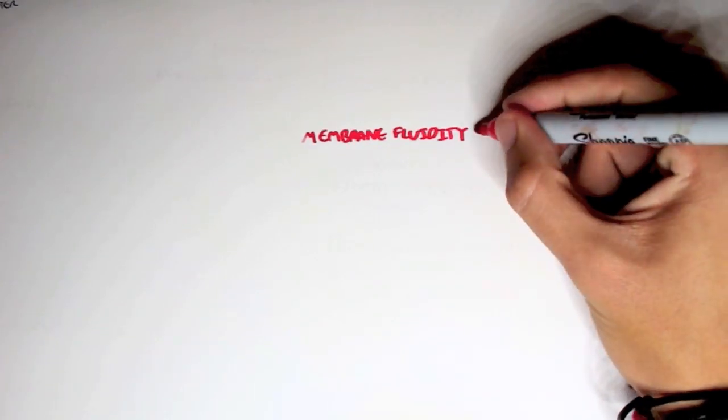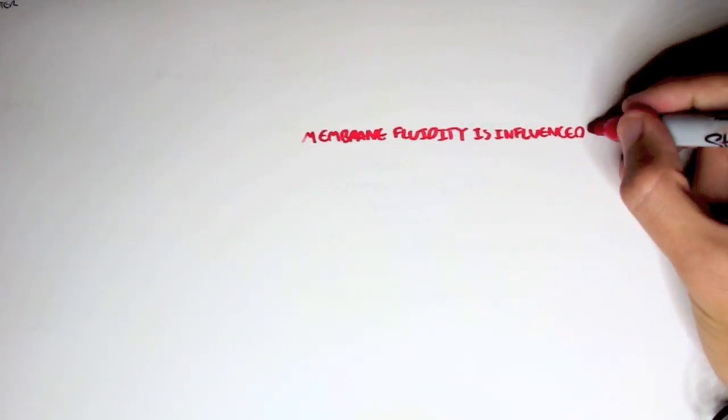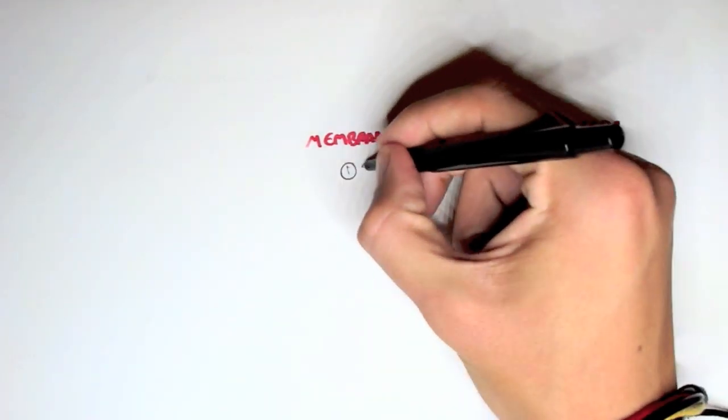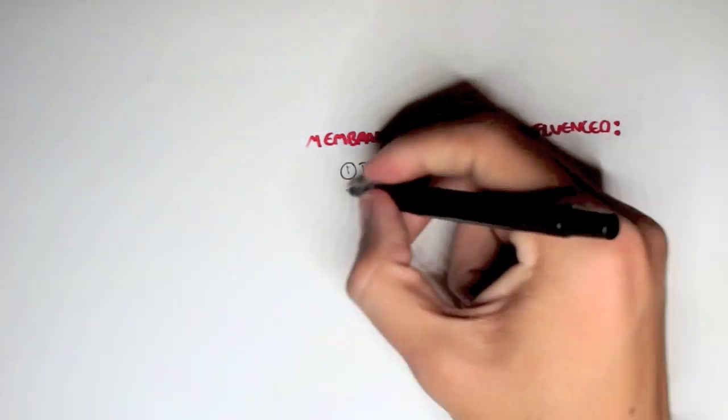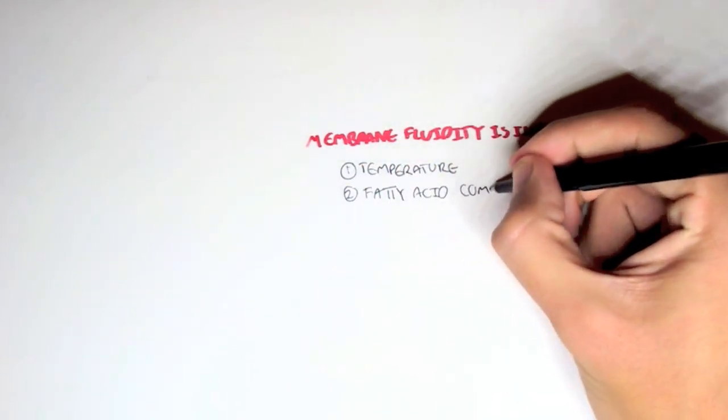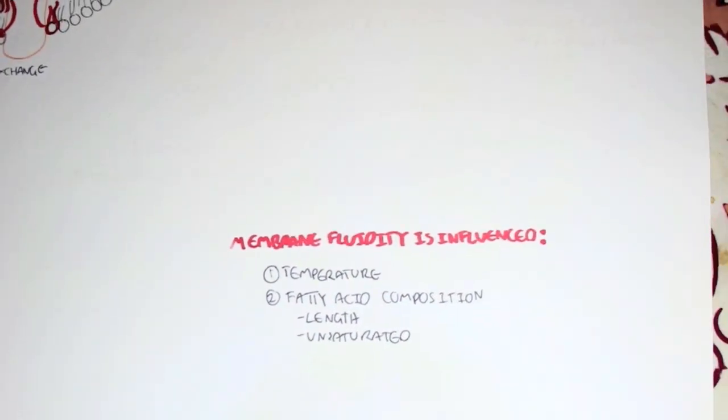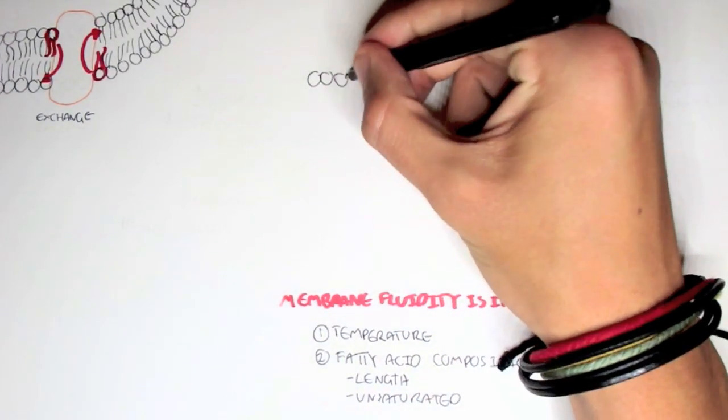Now let's talk about how membrane fluidity itself is influenced. Now what influences membrane fluidity? Most importantly the two is temperature and also the fatty acid composition. What I mean by this is the fatty acid length for example, or if they contain unsaturated double bonds.